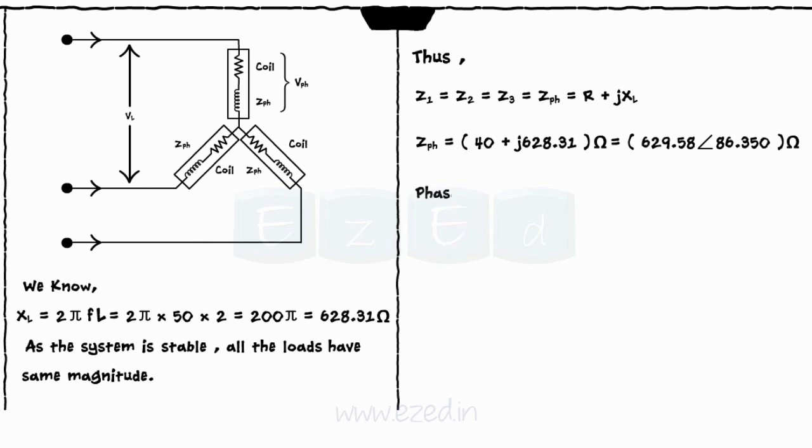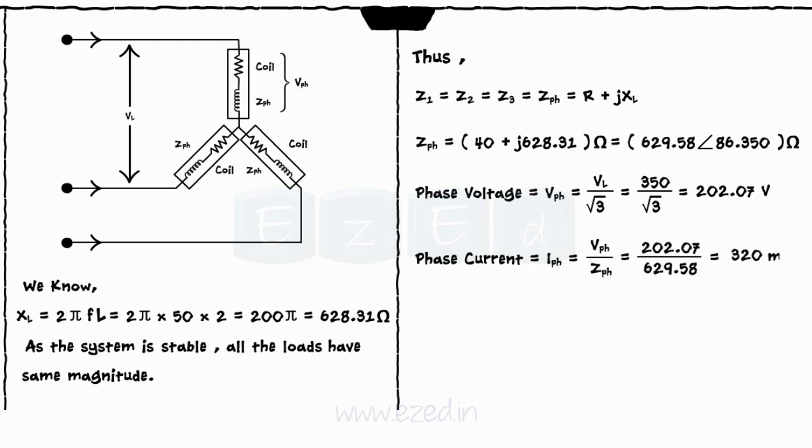The phase voltage VPH equals VL upon root 3 equals 202.07 volts. The phase current equals IPH equals VPH upon ZPH equals 320 milliampere.